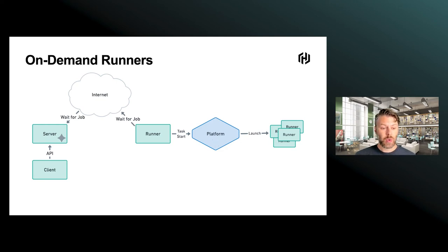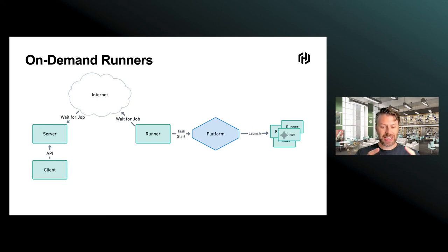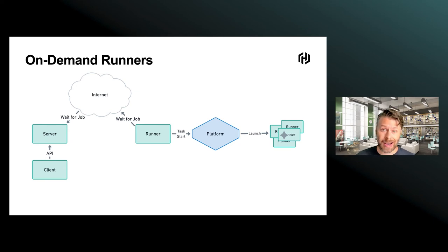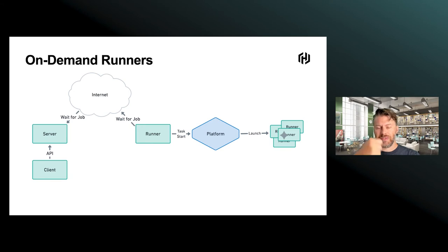We've basically allowed those runners to be launched in a platform. One really crucial thing this unlocks is scalability. Before with static runners, an operator had to decide how many runners to run, and that number determined the capacity of your Waypoint system. If you didn't have enough runners, you could only process a certain number of jobs before running out of compute. This on-demand runner concept allows us to spin up runners to soak up the capacity of whatever platform it might be, pretty transparently, without operators having to reconfigure different numbers of static runners.